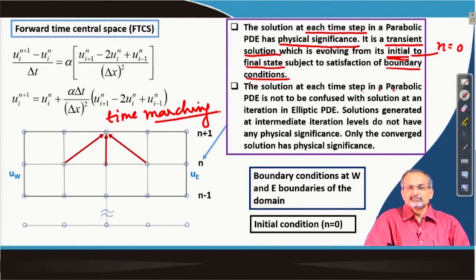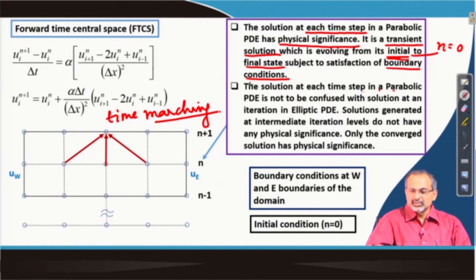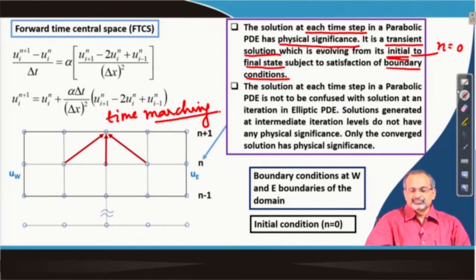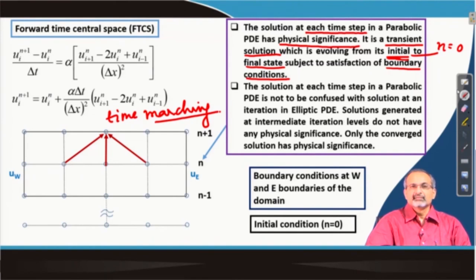There is an initial state from where you begin, and right from the initial state you keep satisfying boundary conditions and evolve the solution in both space and time till you reach a final equilibrium state. Each time step that you cross and the intermediate solutions you generate form part of this transient solution and have physical significance. That means if you were to study the problem experimentally, measuring the evolution of these properties by a suitable experimental technique would give data directly comparable with what you are generating numerically. These are measurable quantities and they have physical significance.